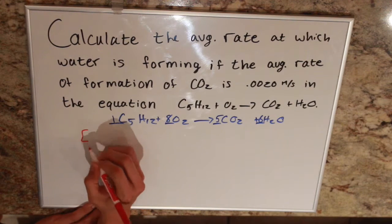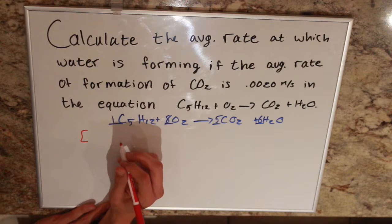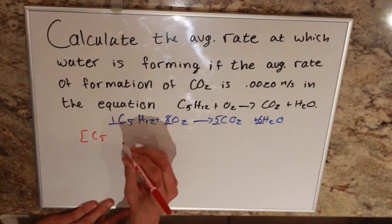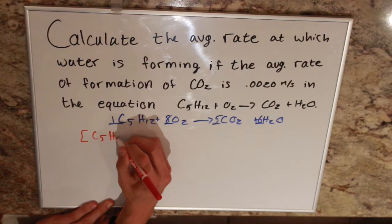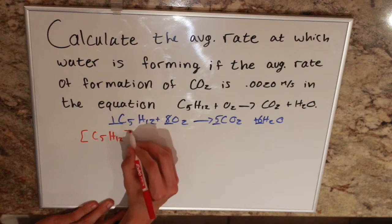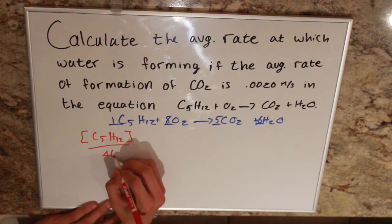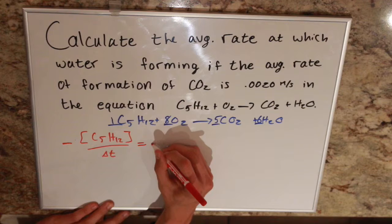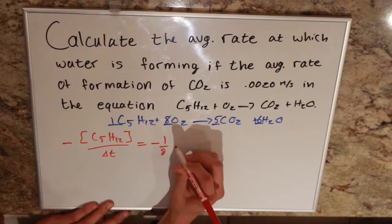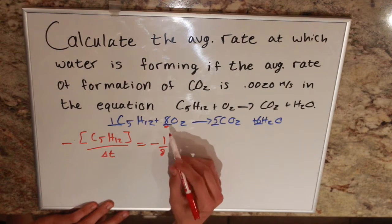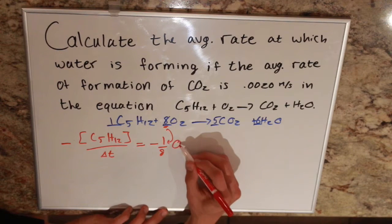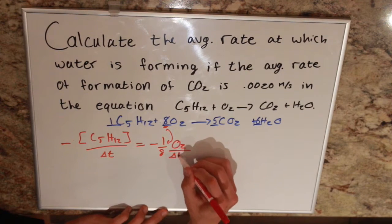Now we're going to set up our rate expression. We have our C5H12 concentration over delta T. It's negative because we're consuming that. That equals negative 1 over 8, O2 over delta T. Coefficient 8 goes under the 1, negative because we're consuming oxygen in this reaction.